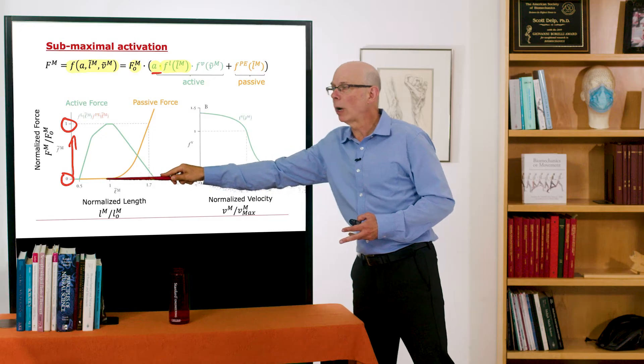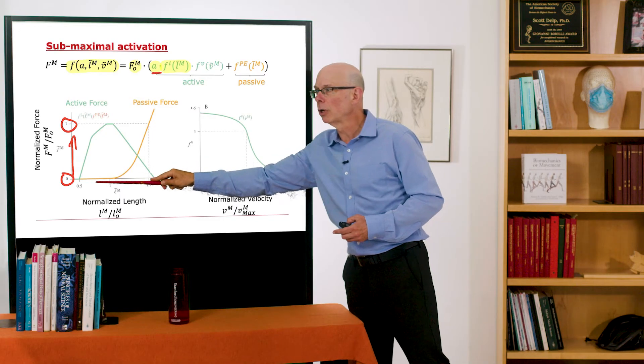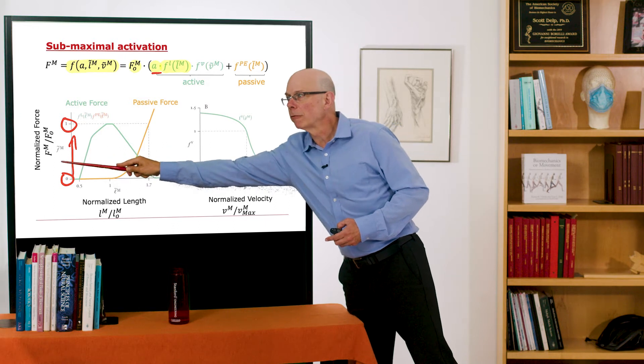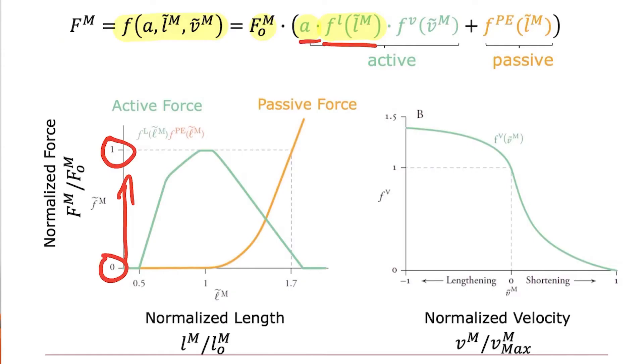So depending on where we are in the length of the muscle, we'll get a number for the force length multiplier for active force here.